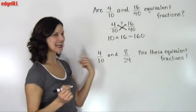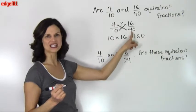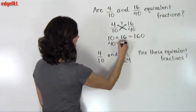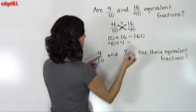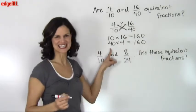And then my second calculation is going to be this cross multiplication of 4 times 40, or 40 times 4, either way. 4 times 40 also equals 160.